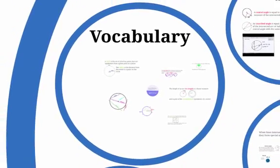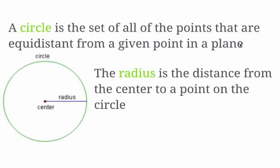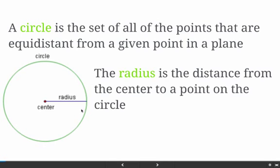Let's start by defining what exactly a circle is. A circle is just the set of all of the points that are equally distant from a given point on a plane. If I take a center point and go out a certain distance and trace all of the points that are that distance around from the center, that's what makes up a circle. The radius is that distance from the center to the edge of the circle — a segment drawn from the center to the edge.